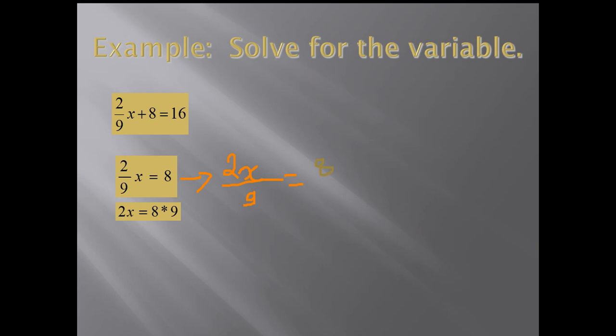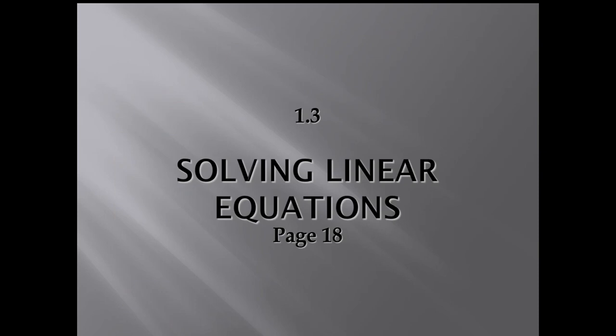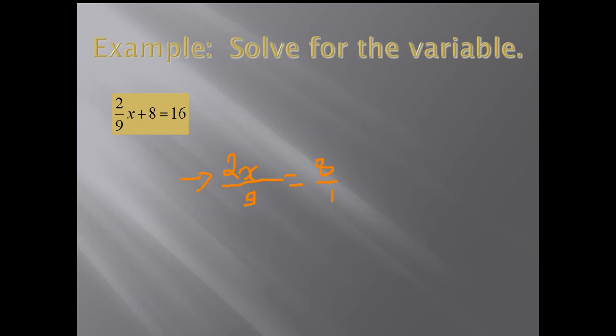As advice, when you have like this, you can also write it 2x over 9 is equal to 8. Equal to 8 means 8 over 1, cross multiply. When you cross multiply here, you will be safe and you will not do any mistake. Then, 2x is equal to 8 times 9, which is 72.